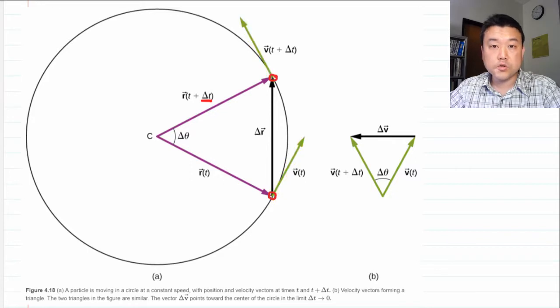This is called uniform circular motion because the speed is assumed to be constant. So the length of the velocity vector doesn't change, only the direction does. I've drawn a copy of the velocity vector here.